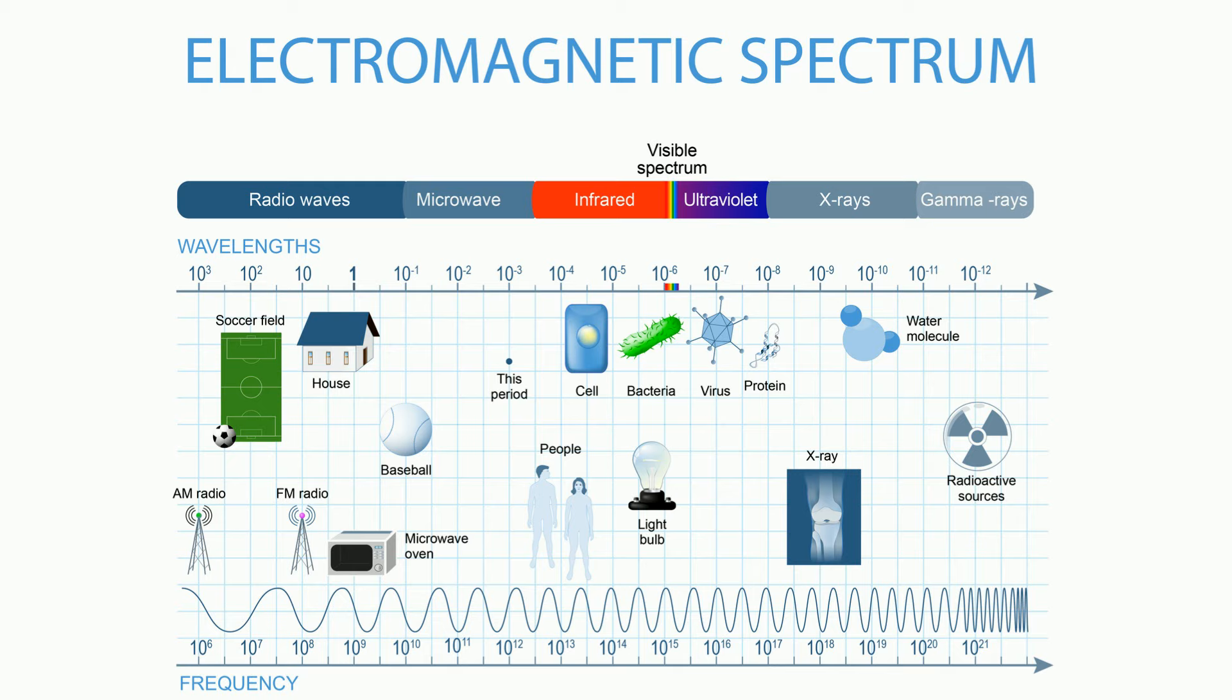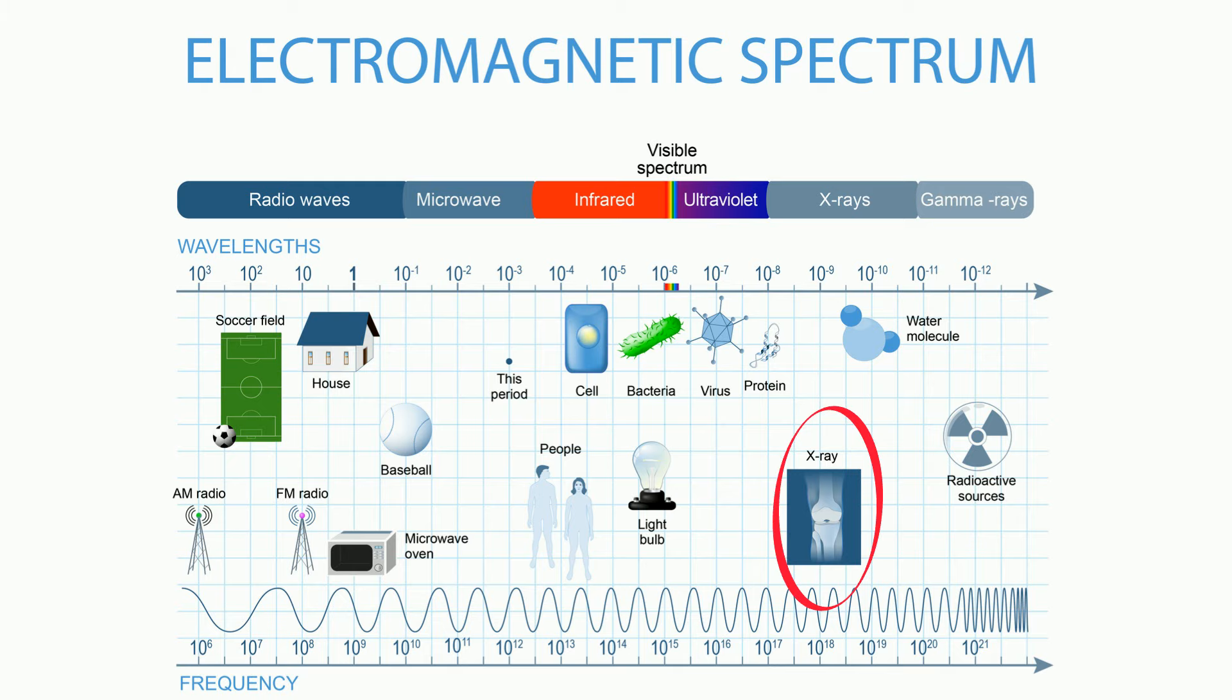At this point the wavelengths are very, very small. X-rays are slightly larger than a water molecule, and radioactive sources such as gamma rays are the size of atoms.